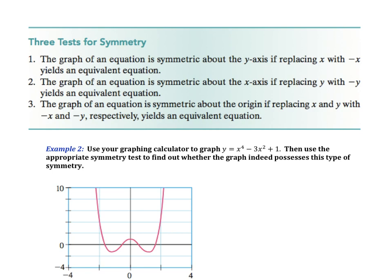The other thing we're going to have to do is graph an equation and determine what type of symmetry it possesses. There are three algebraic tests for symmetry. To test symmetry about the y-axis, we change x to -x — if we get the same equation, it's symmetric about the y-axis. To test symmetry about the x-axis, we change y to -y and see if it works. To test symmetry about the origin, we use both -x and -y.